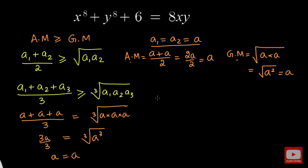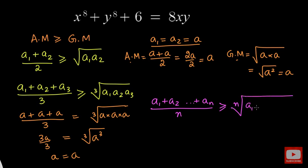We can apply this to any general case. If we have a1, a2, a3 all the way up to a_n, then we can say that the arithmetic mean — that is a1 plus a2 plus a3 all the way till a_n divided by n — is always greater than or equal to the nth root of a1 times a2 times a3 all the way till a_n. This is the AM-GM inequality, and the equality holds when all the numbers are equal to each other.